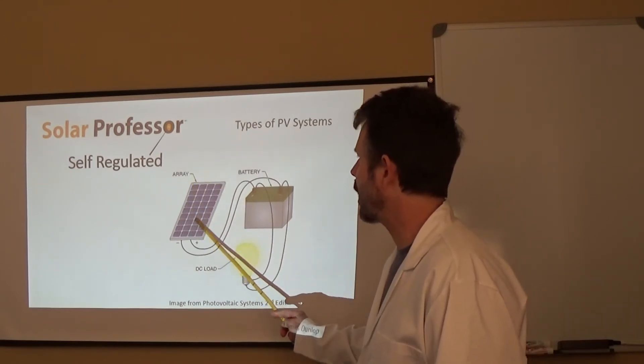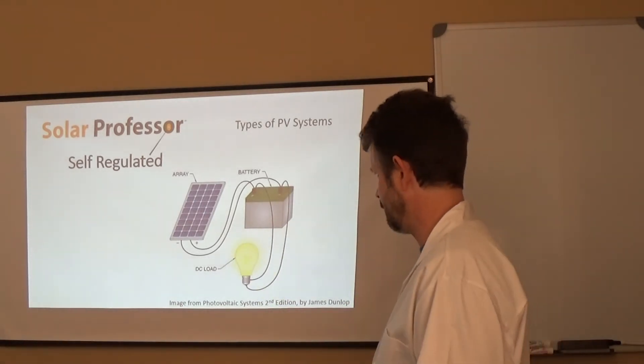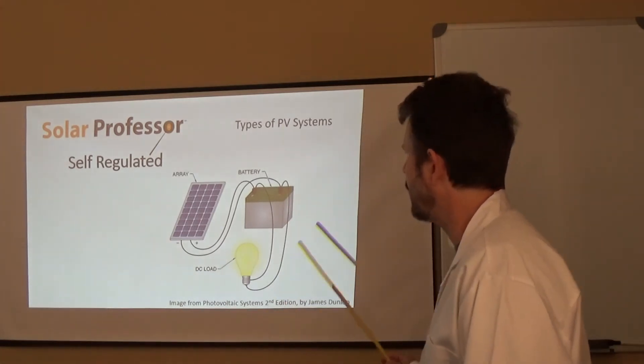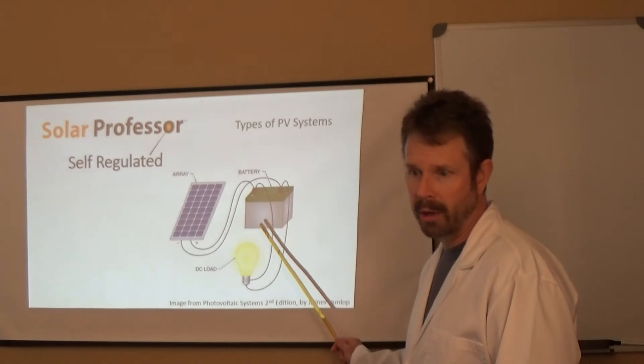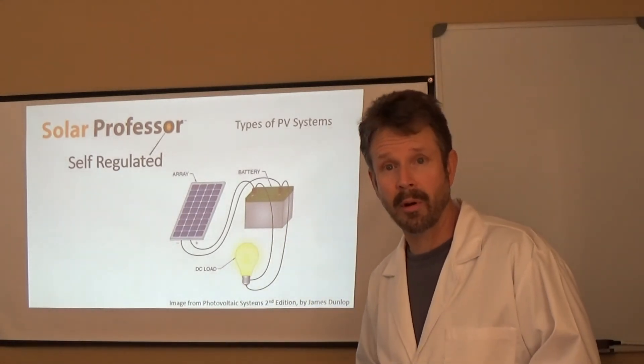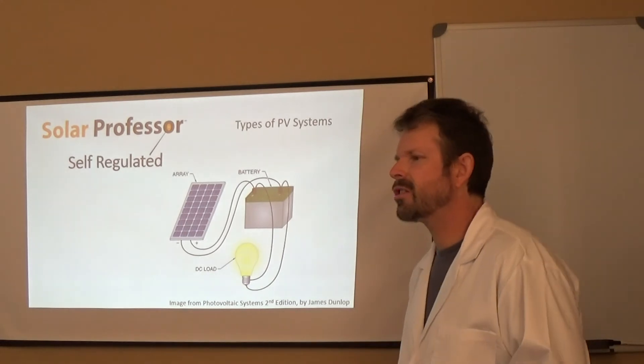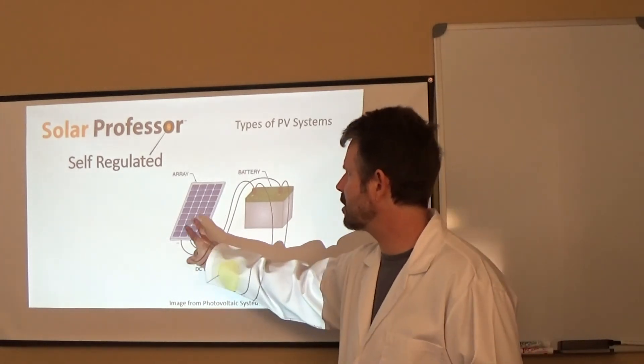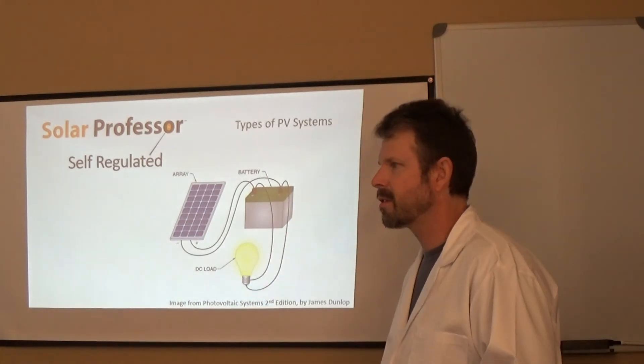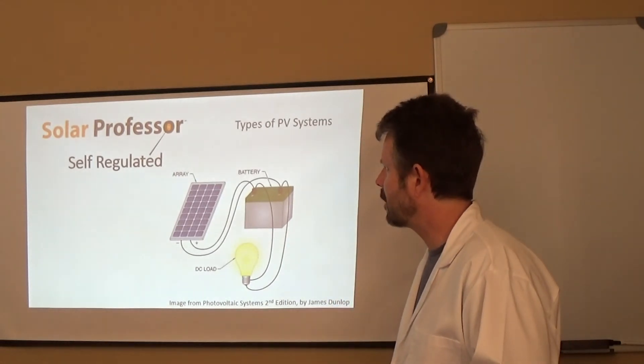And then of course, here is a self-regulated system. This is simply an array, a battery, and then of course a load, whatever it might be, lights or a fan or a pump or something like that. But this is missing one critical component. I'm not a huge fan of these systems because it doesn't have that critical component called the charge controller. We talked about that earlier. It's hard to size this just perfect, but you have to do a really good job of matching the output of the solar panel with the capacity of the battery and then of course the demand of the load. So simple self-regulated system right there for us.